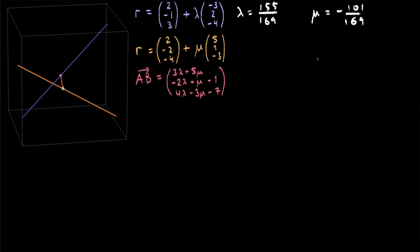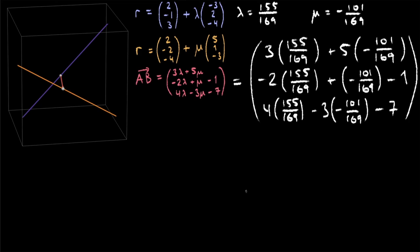And we're not done yet. Our final step is to substitute lambda and mu into our vector A to B, and then find the length of A to B. You end up with this monstrosity of a vector, and if you simplify the fractions out, you should end up with these three numbers.